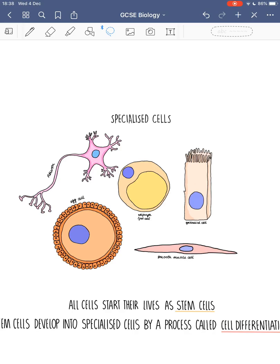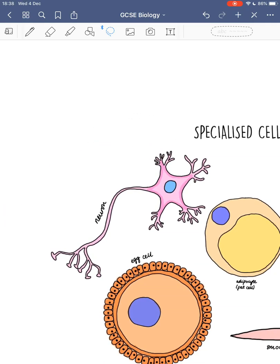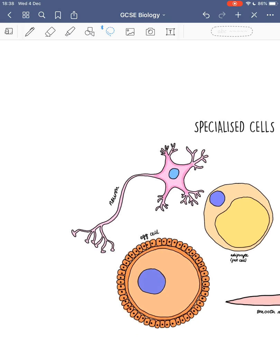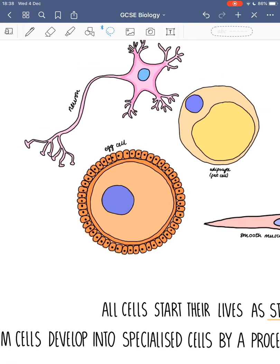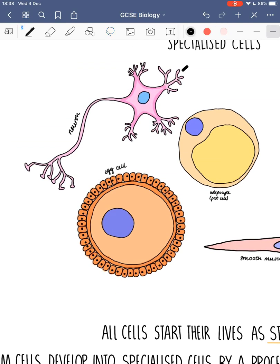Not all cells look the same — in fact, they can look really different to one another. Here I've drawn some examples of specialised cells, which are all adapted for their functions. Here we have a neuron, a brain cell — they're really thin, so loads can be packed into our brains. We have about 86 billion neurons in our brain; to put that into perspective, there are about 100 billion stars in our galaxy. Neurons have little endings called dendrites, which allow them to form loads of different connections with other brain cells.